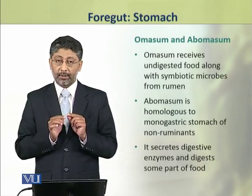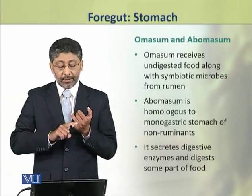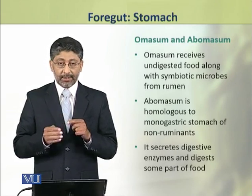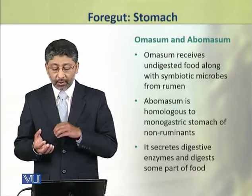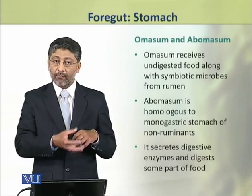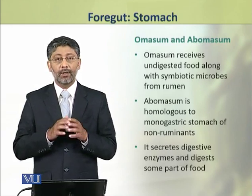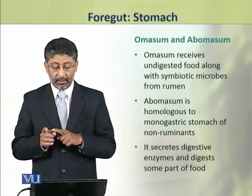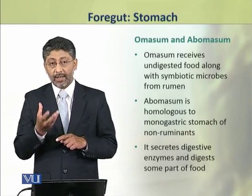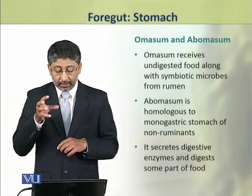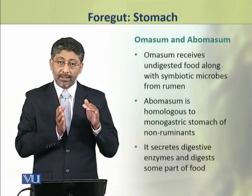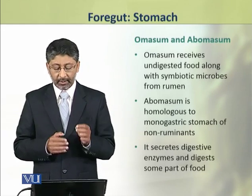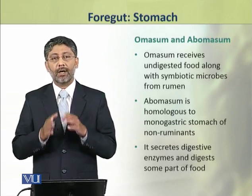Omasum aur abomasum — omasum is undigested food ko rumen se receive kerta hai. Is ke sath sath food ke sath jo bohot saare symbiotic microbes rumen mein rehte the, wo bhi omasum mein aa jaate hain. Ab omasum jo hai wo true homolog hai stomach ka, jo ke non-ruminants mein single chamber ke tor par paya jata hai. Yeh true stomach secretory role ada karta hai — it secretes the digestive enzymes characteristic of the stomach and also digests some protein part of the food.